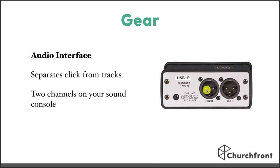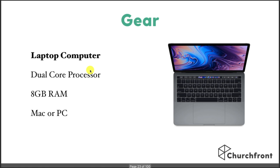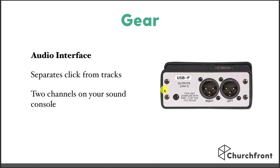Next we have the audio interface. I love this little audio interface — it's a PVUSBP. It has a USB cable on one side that plugs into your computer, and on the other side it has two balanced outputs that go straight into your sound system with XLR cables. It allows you to split out the two channels between your tracks and then your click and cues. I highly recommend this interface — it's about 50 bucks, and it plugs into two channels on your audio console.